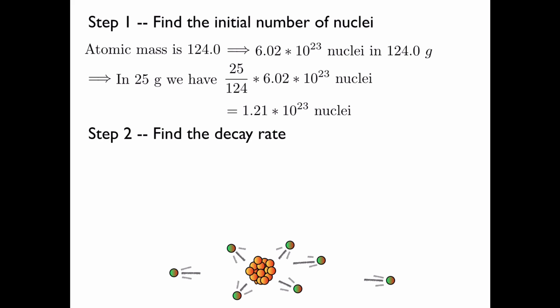Now let's find the decay rate. This is the expression which describes radioactive decay. It states that the number of nuclei there are at a time t is equal to the number there was initially, times e to the minus lambda, where lambda is the decay rate, and t, the time.